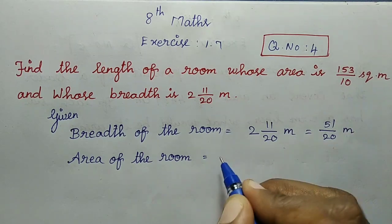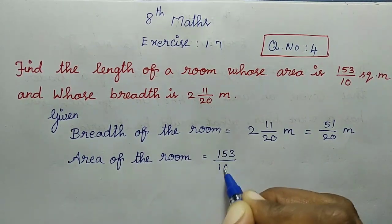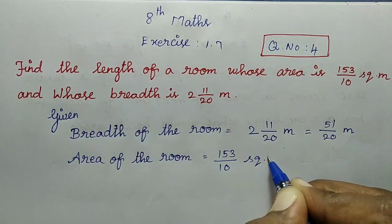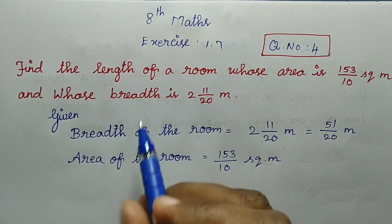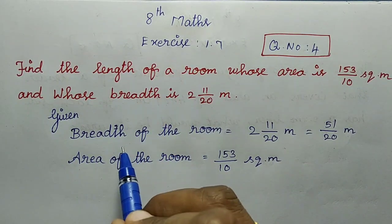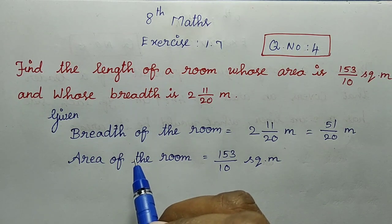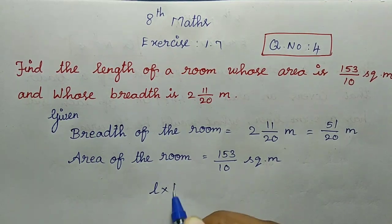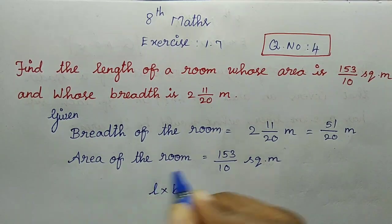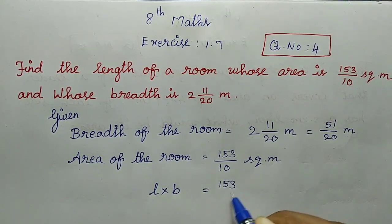The area of the room is 153 divided by 10 square meters. We know the formula: Area of a rectangle equals Length into Breadth. So, Area of the room equals 153 divided by 10.